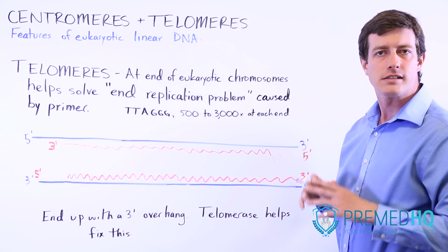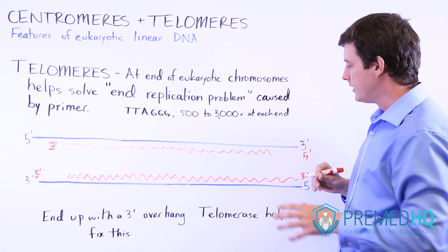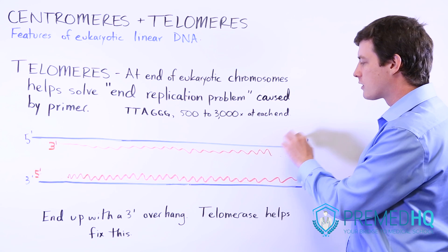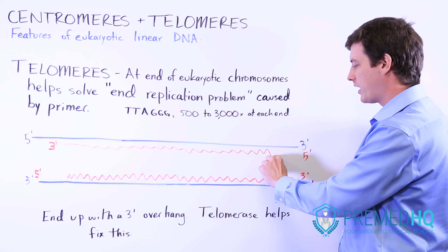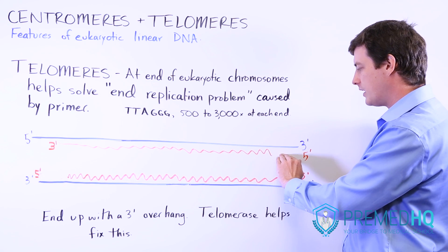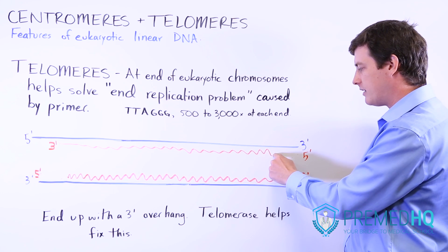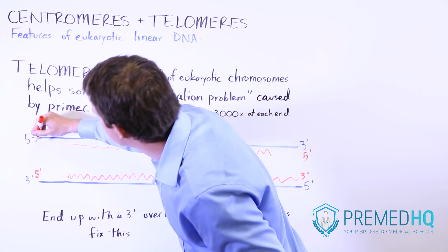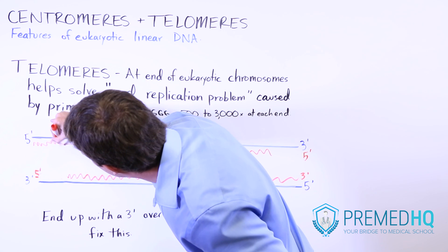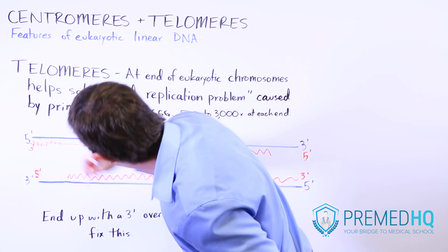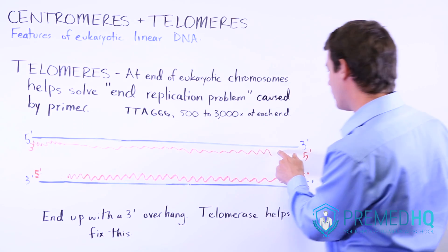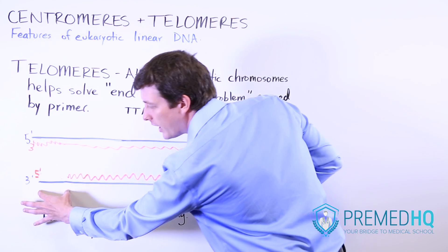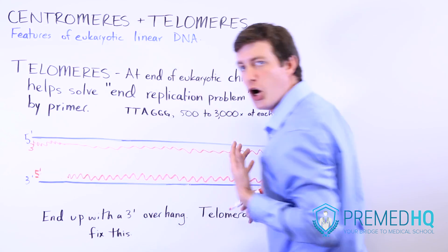This creates what is known as a three prime overhang, because when we have these two strands, the three prime end of the parent strand hangs over the five prime end of the daughter strand. We can continue this all the way to the end, and everything will match up perfectly except that there will be an overhang of the three prime end on each side.